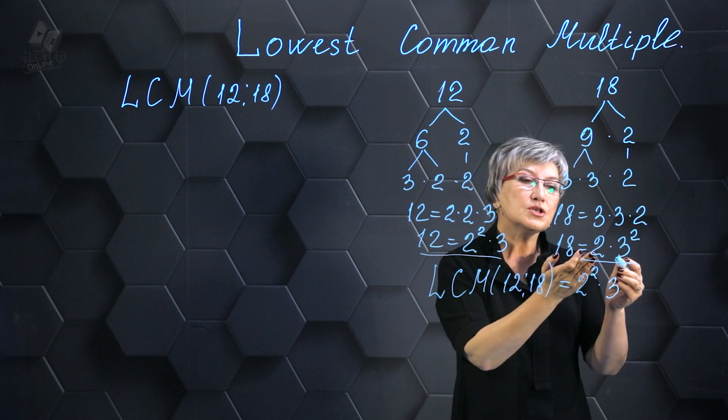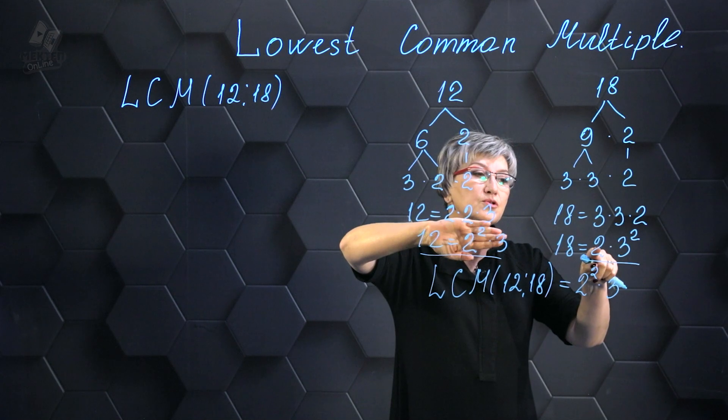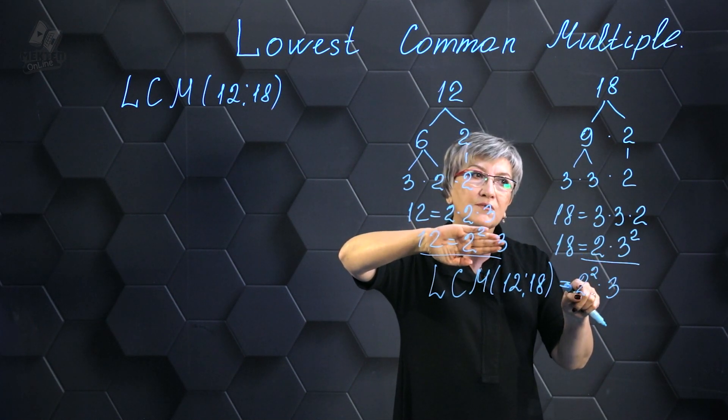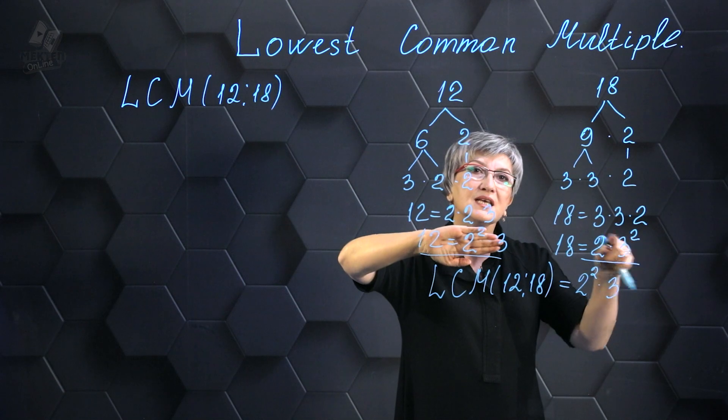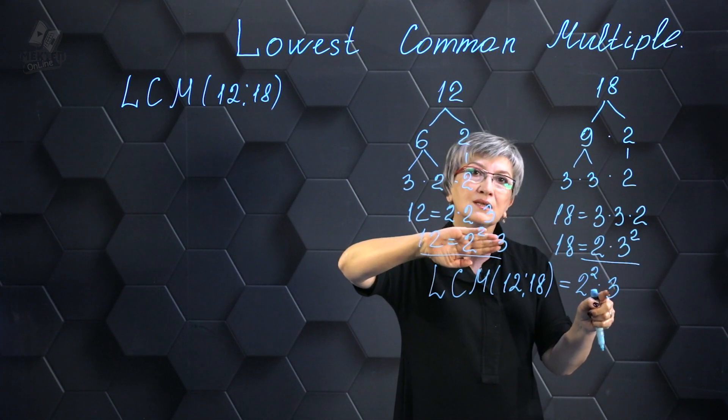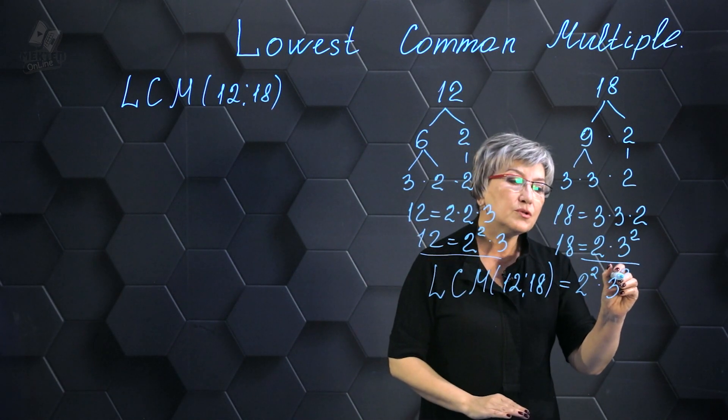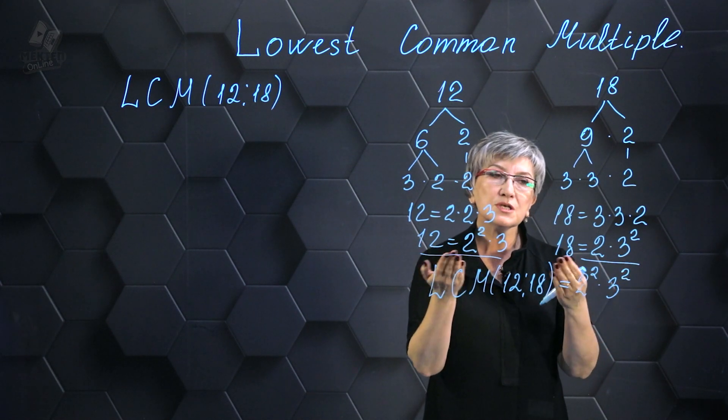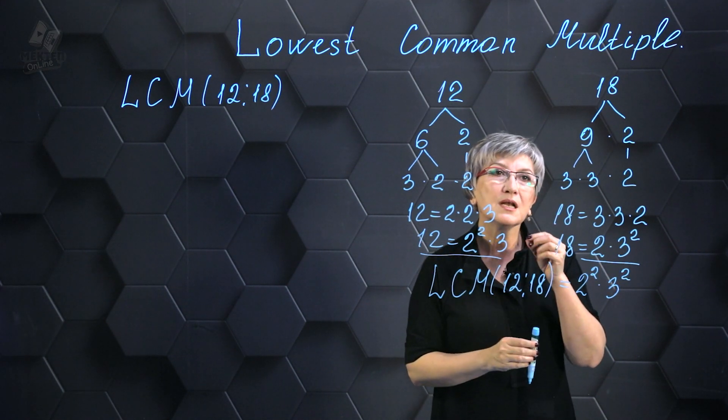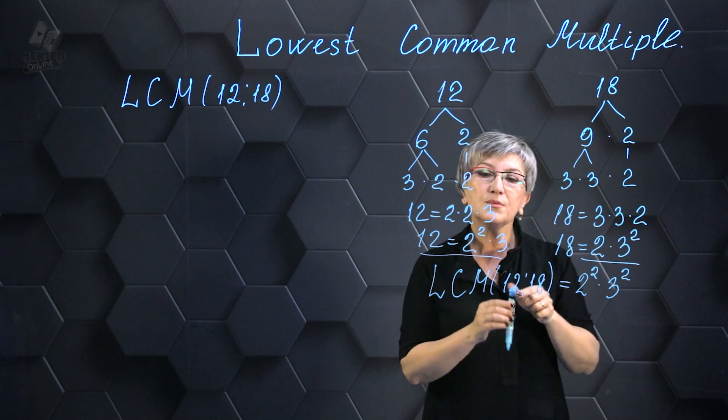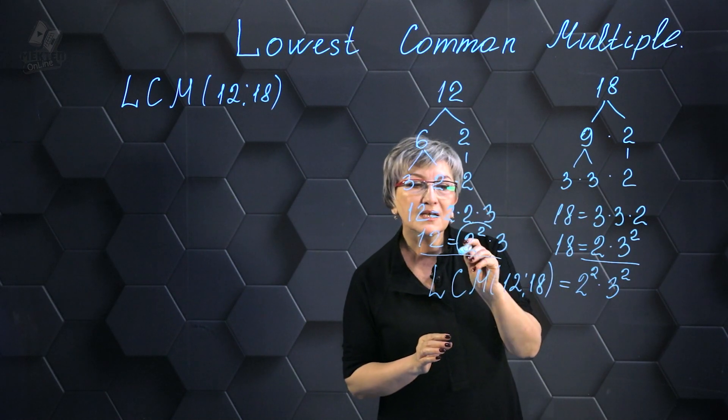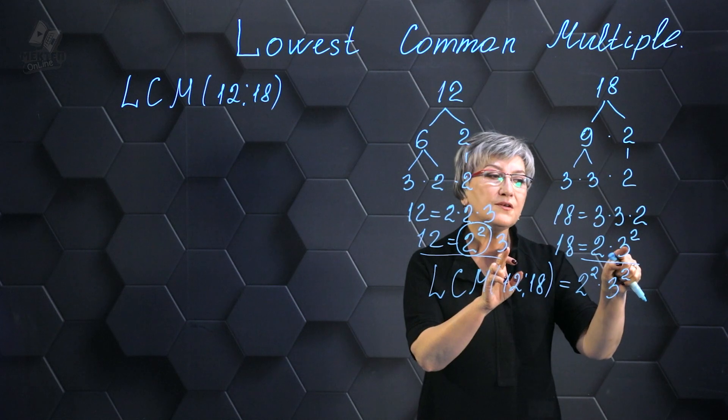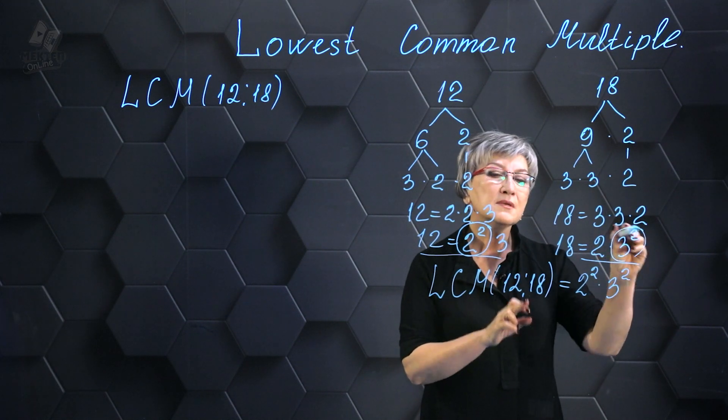In this case, I have a 2, but it's already sitting here. I already have 2 squared and 3 squared is two 3s, but I only have one 3 in the first number, so I write 3 squared. Based on the factors we considered, I choose the factor with the highest power, which is 2 squared, because 2 raised to the power of 2 is greater than just 2 on its own. And 3 raised to the power of 2 is greater than 3.